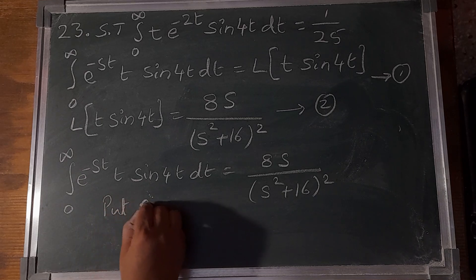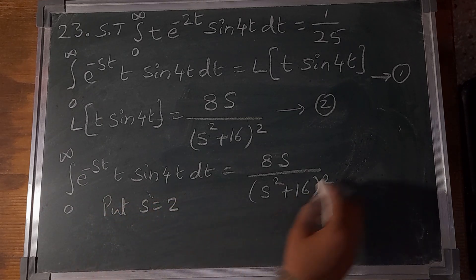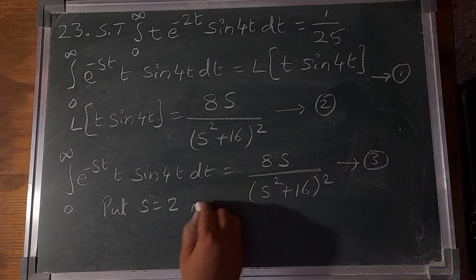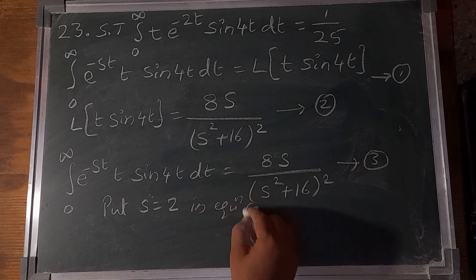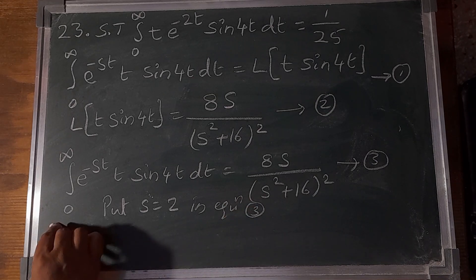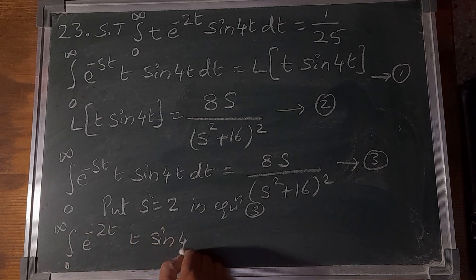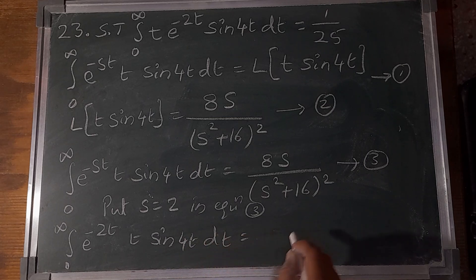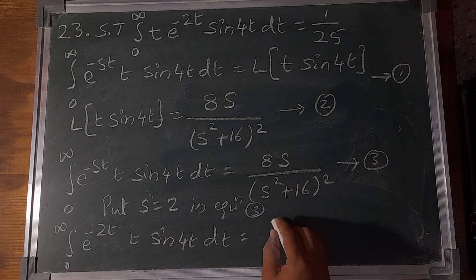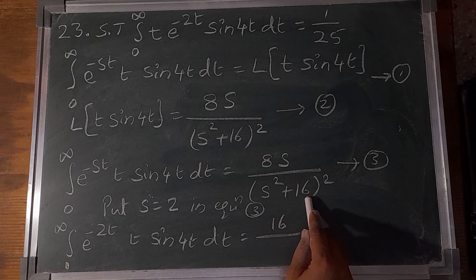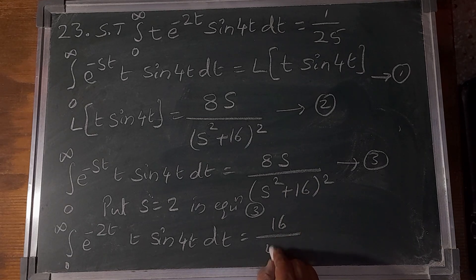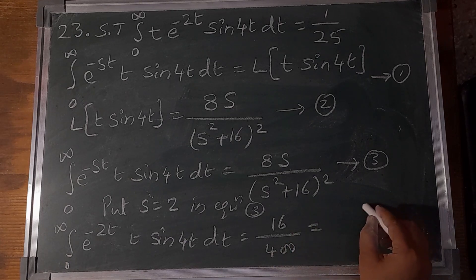Put s = 2 in equation number 3. The integral of 0 to infinity e^(-2t) t sin(4t) dt equals 8(2)/(2² + 16)² = 16/(4 + 16)² = 16/20².